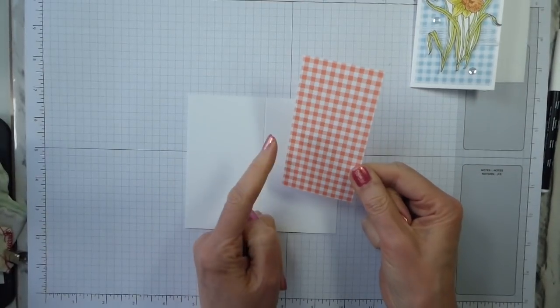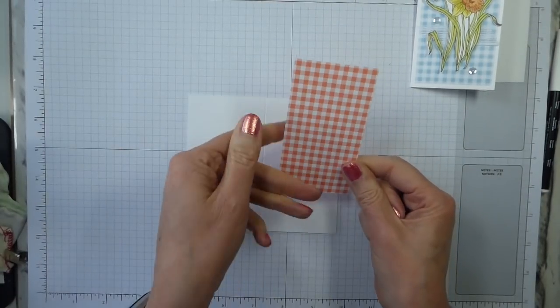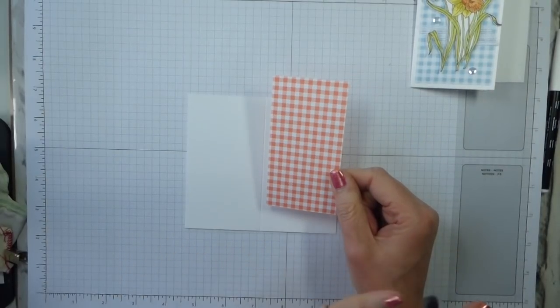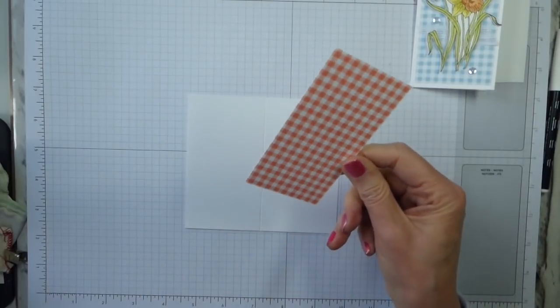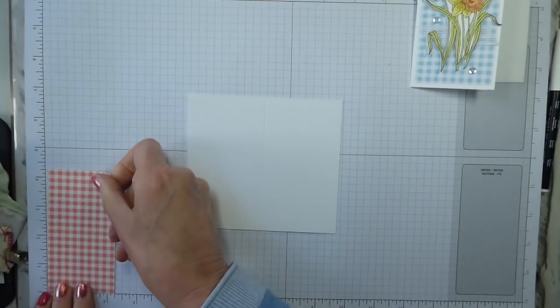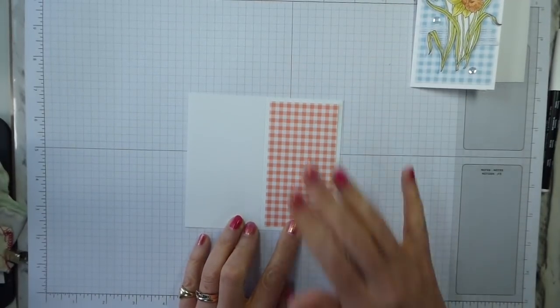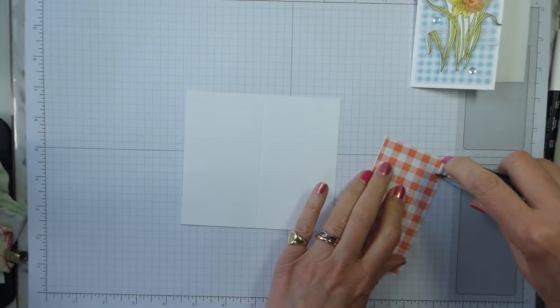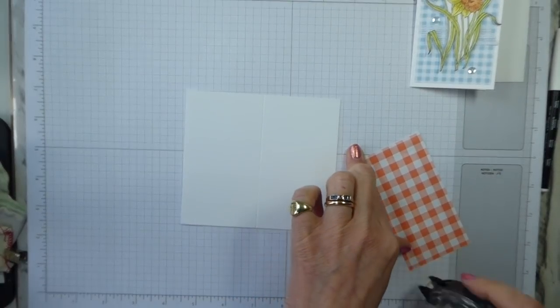I've cut a piece of, this time I'm using the Grapefruit Grove Designer Series Paper. You've got the choice of the small check or the large check because this is a, I want it as a sort of just as a background rather than a statement. I'm using the small check and I've cut this just a quarter of an inch smaller in each direction. So four and a quarter by two and a quarter inches and then that will sit nicely on the front of my card with a little border around the edge.